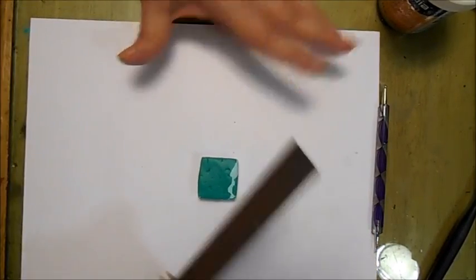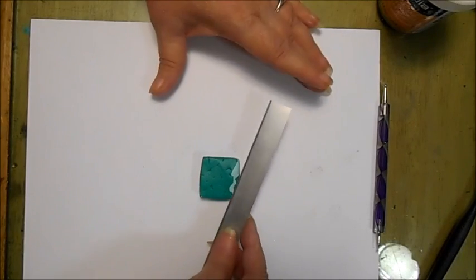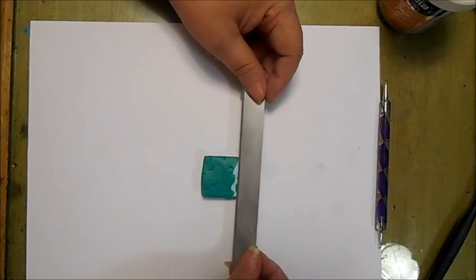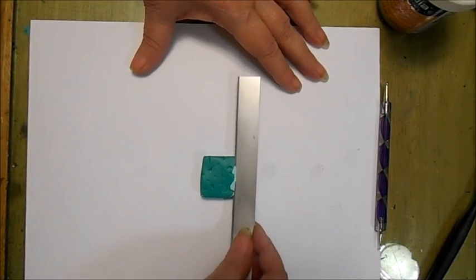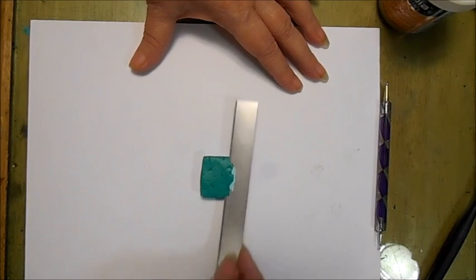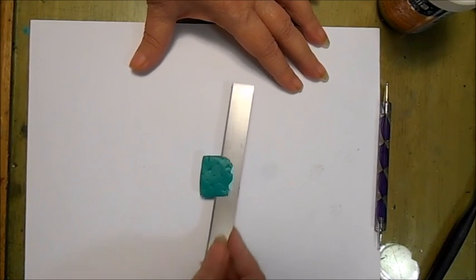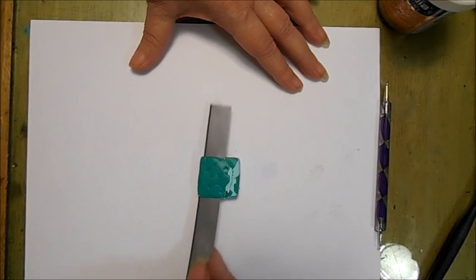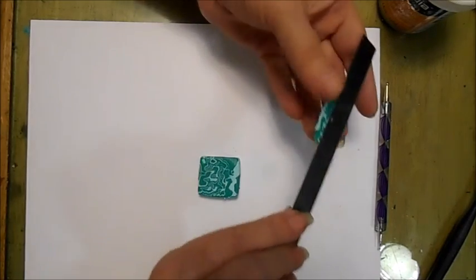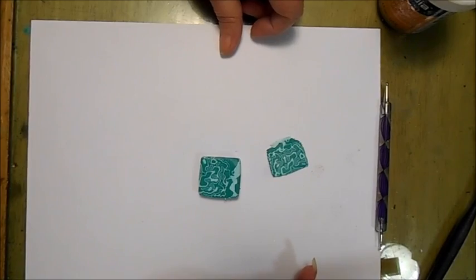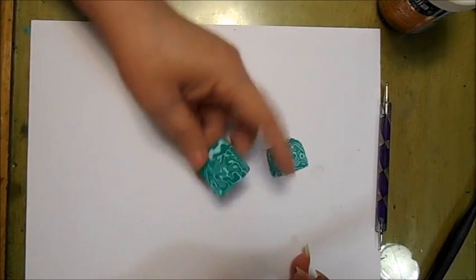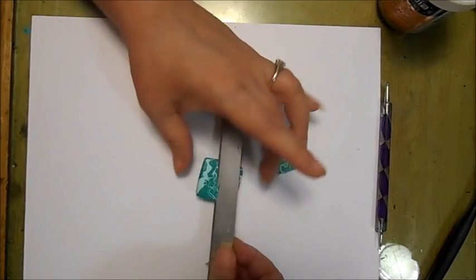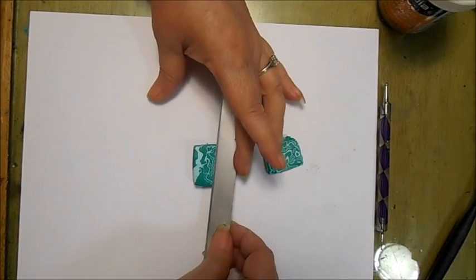Now normally I wouldn't be doing this on a sheet of paper. I'd have it on a tile. But I'm going to take my blade and I'm going to cut a layer off the top. I'm going to actually give it a sawing type motion so that it doesn't distort the piece as much. There you go.